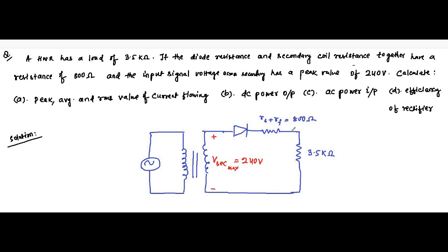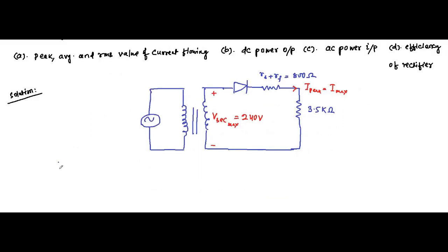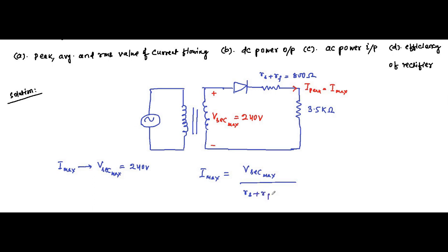We will start by determining the peak value of current flowing, I_peak or I_max. We know that I_max flows when the voltage is maximum. In this case, the secondary winding voltage is maximum because the diode is connected across the secondary winding. The maximum secondary voltage is 240 volt. The formula for peak current is V_secondary_max divided by the total resistance, which is the secondary winding resistance plus the forward resistance of the diode plus the load resistance.